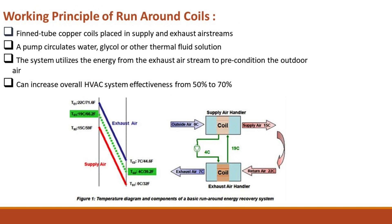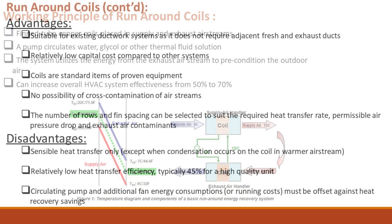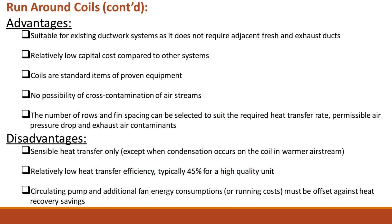Working Principle of Runaround Coils: Fin-tube copper coils are placed in supply and exhaust air streams. A pump circulates water, glycol, or other thermal fluid solution. The system utilizes the energy from the exhaust air stream to precondition the outdoor air, and can increase overall HVAC system effectiveness from 50% to 70%.